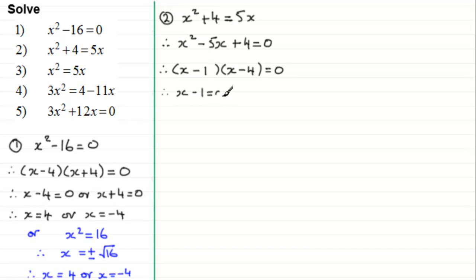And each one of these factors could equal 0. So therefore x minus 1 could equal 0 or the other factor x minus 4 could equal 0. And for this one, if we add 1 to both sides, we get x equals 1. And in the second equation, adding 4 to both sides, x equals 4.